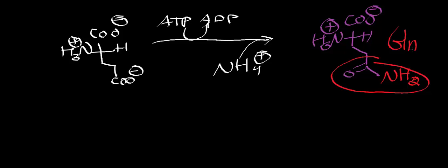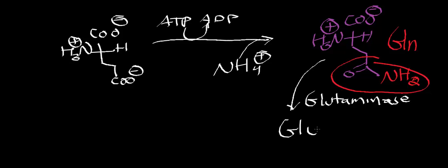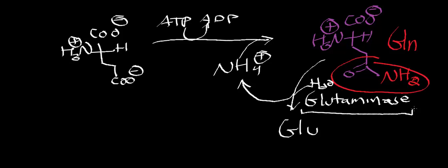When glutamine gets to the liver, it can react with glutaminase, a hydrolytic enzyme that hydrolyzes off the amine, regenerating glutamate and releasing ammonia. Glutaminase is expressed at very high concentrations in the mitochondria of hepatocytes. When glutamine enters the liver, it is transported into the mitochondrial matrix where glutaminase converts it to glutamate.